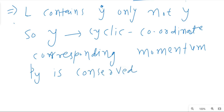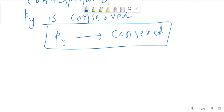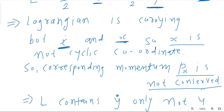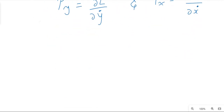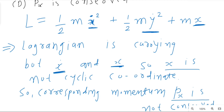So we have py conserved and px not conserved. We note the formulas: py = ∂L/∂ẏ and px = ∂L/∂ẋ. Taking the derivative with respect to x-dot gives ∂L/∂ẋ = mẋ + m·∂x/∂ẋ. Taking the derivative with respect to y-dot, the factor of 2 cancels and we get mẏ.